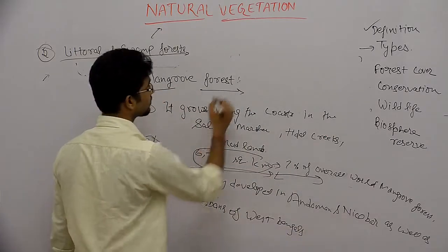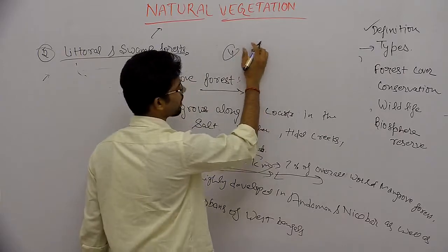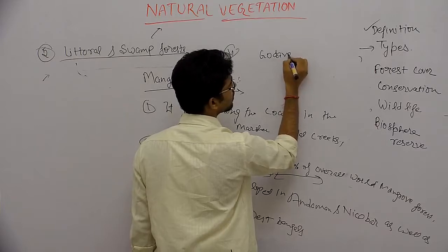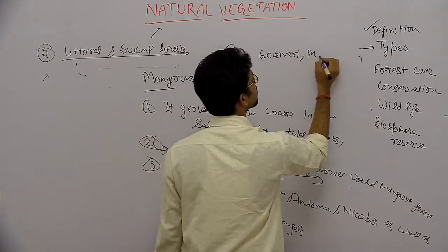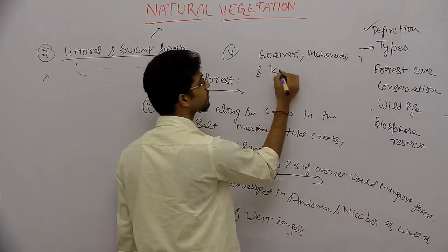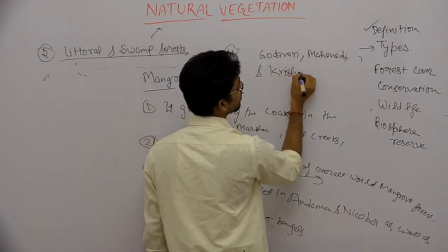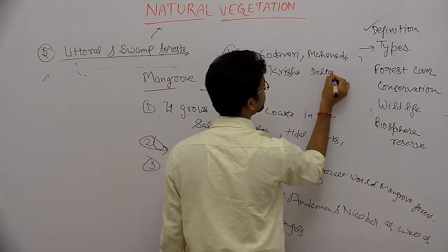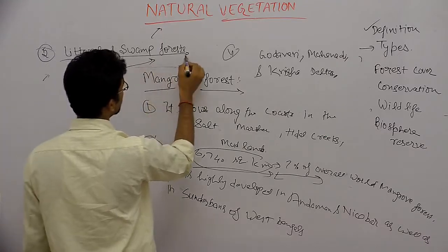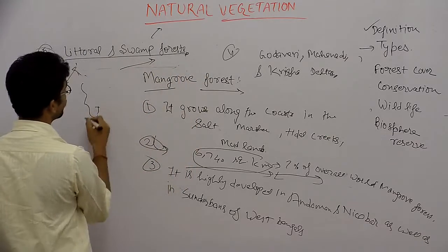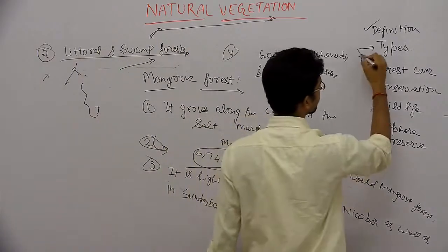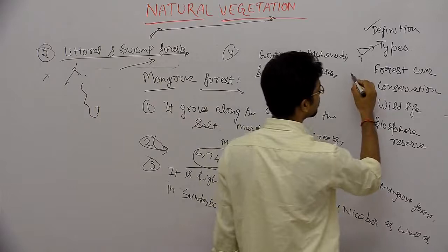Other than that, mangrove forests are also found along the Godavari, Mahanadi, and Krishna river deltas. This is all about Lottel and Swamp Forests, and with this we end the types of natural vegetation. Now we will move to the forest cover.